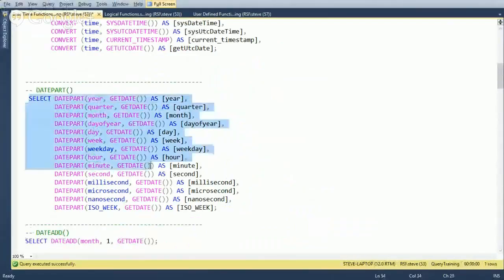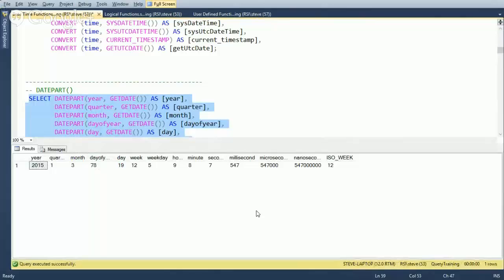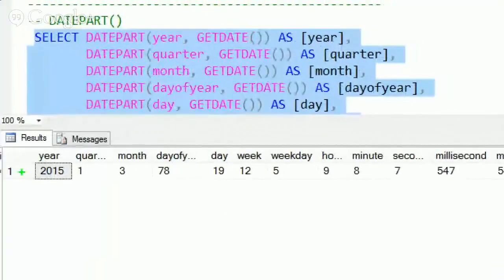Let's take a look. We'll try running this and see what we get. As our results now, the year is 2015, it's the first quarter of the year, it's the third month.